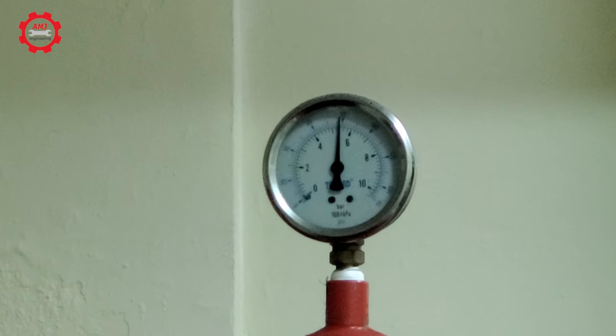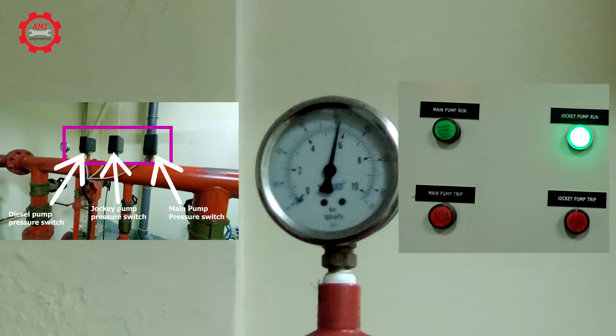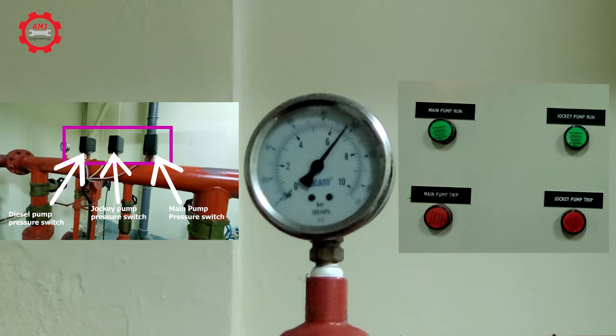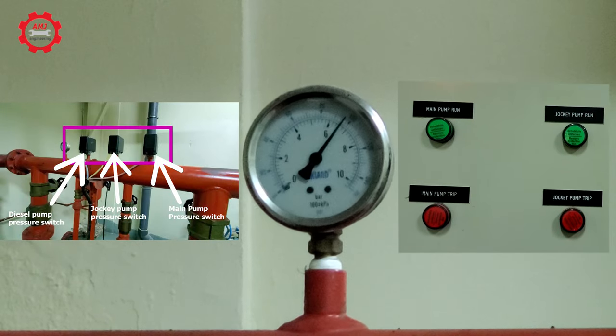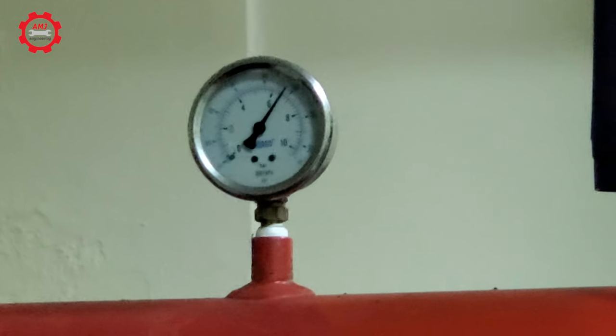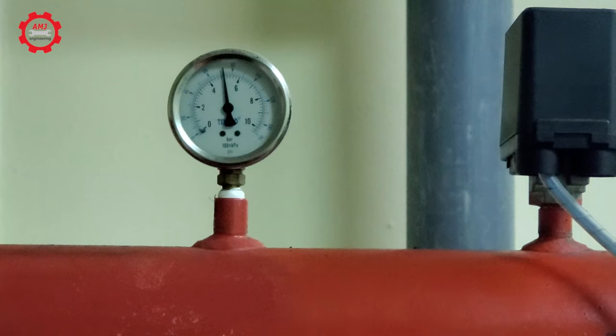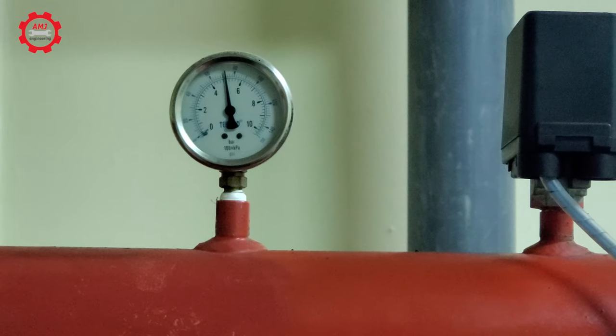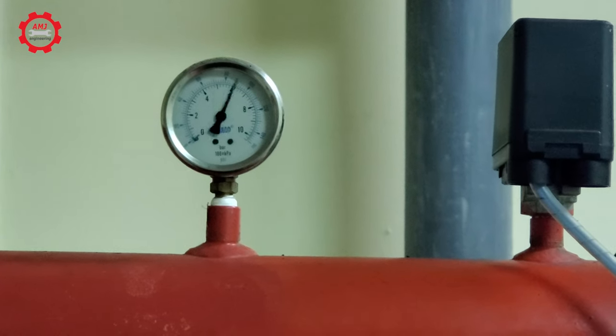When the water pressure drops below the preset level, the pressure switch energizes a starter which activates the jockey pump. Correct water pressure is therefore maintained at all times. If a fire should start, the pressure will continue to drop and the main fire pump will start.